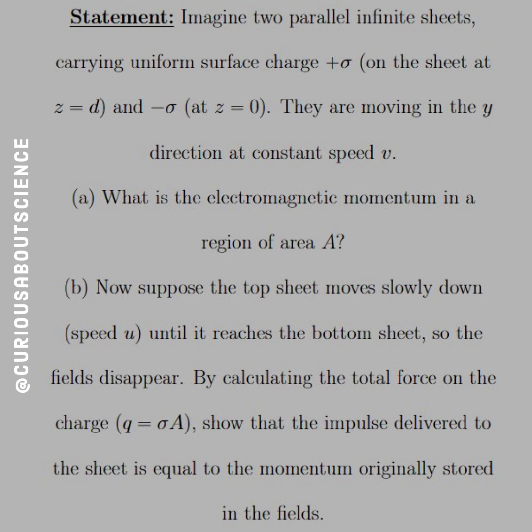Part A: What is the electromagnetic momentum in a region of area A? Part B: Now suppose the top sheet moves slowly down at speed u until it reaches the bottom sheet, so the fields disappear. By calculating the total force on the charge q equals sigma A, show that the impulse delivered to the sheet is equal to the momentum originally stored in the fields.